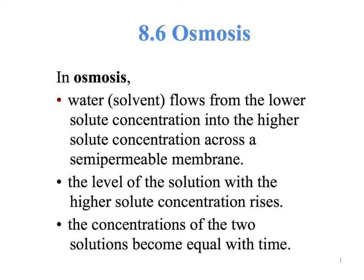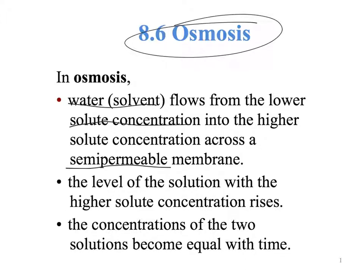The last part of this chapter is about properties of solutions, and the only property we're going to discuss is called osmosis. Osmosis is described using the example of water. Water, which is a solvent, flows from the lower solute concentration into the area of higher concentration through a semipermeable membrane. The levels of the solution will not be the same, but what is happening is that the two concentrations are trying to become equal.